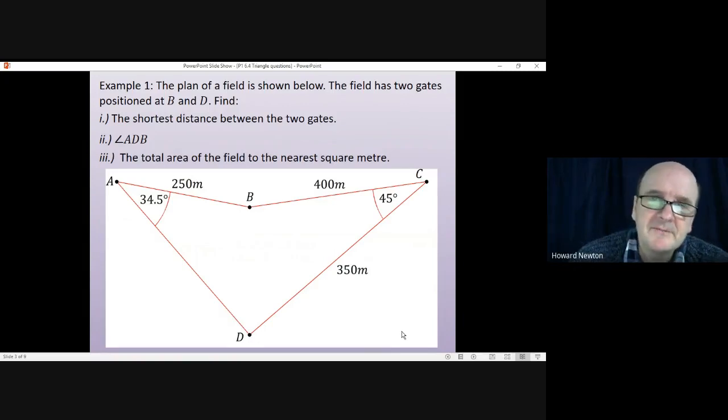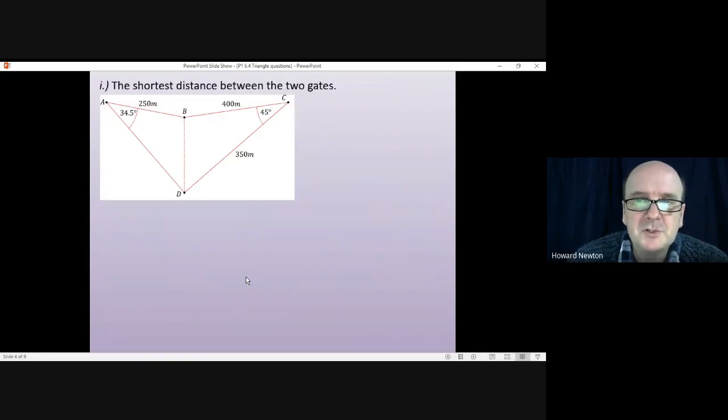Okay, let's have a look at this. First of all, part 1: the shortest distance between the two gates, well that'll be the distance BD. At some point we're going to need to draw in BD just to make things a little bit easier. Now we've got two triangles.